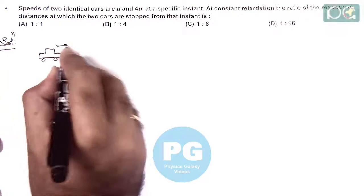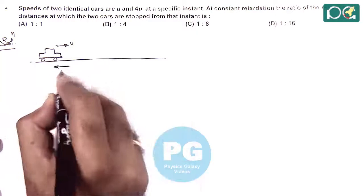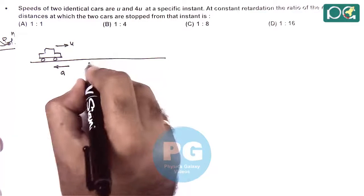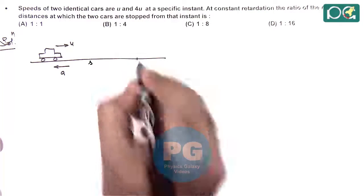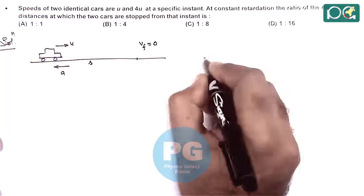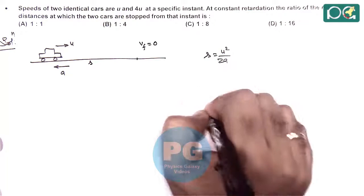A car is moving with a speed u and suddenly the brakes are applied which produces a retardation a. Then we know well the distance s after which it will come to rest or final velocity becomes zero can be given as u square by 2a, that we have discussed in theory part.